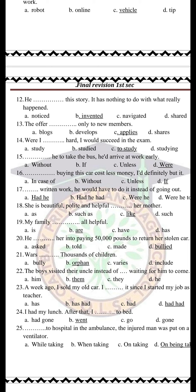Number 24: 'I had my lunch. After that, I — space — to bed.' We know that 'after' is followed by the first action. But 'after that' changes the meaning — it means the action follows sequentially, so having lunch is the first action and going to bed is the second. We can't put 'had gone' here. The right answer is 'went.'